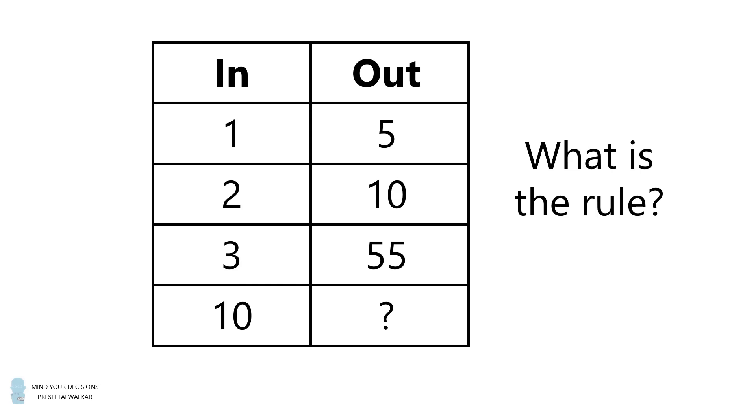This question was given to gifted eight-year-old students and I saw it on reddit homework help. Many of the adults thought this was too hard of a question to give to eight-year-old students. In fact, some of them speculated there must be a typo in the question. The output value for 3 should not be 55. They speculated that it should instead be equal to 15. Then we would have a simple rule: the outputs would be equal to five times the inputs, which would mean that the output for 10 would be equal to 50.